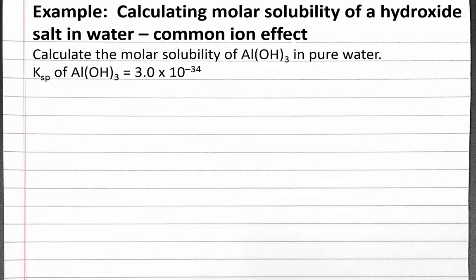In this example problem, we calculate the molar solubility of a hydroxide salt in water, taking into account the common ion effect. The problem reads: calculate the molar solubility of aluminum hydroxide in pure water. The solubility product constant of aluminum hydroxide is 3.0 times 10 to the negative 34.